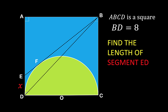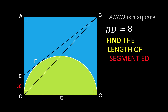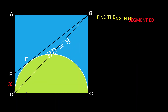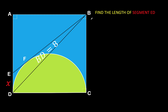You can pause the video and see if you can find the answer. Now let's solve this problem together. The only given information is that we have a square and we know the length of the diagonal, which means the lengths of AB, BC, DC, and AD are all equal.